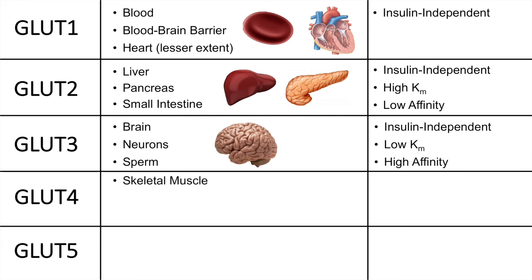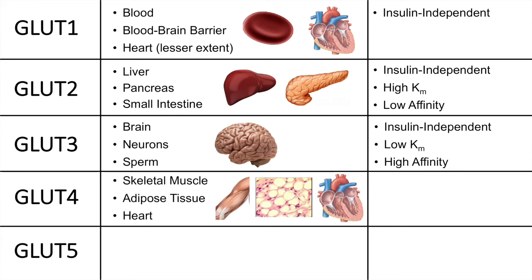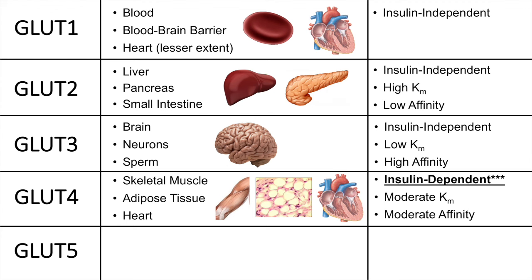For GLUT4, these are found in skeletal muscle, adipose tissue, and the heart. The heart has both GLUT1 and GLUT4, and GLUT4 actually outnumbers GLUT1 in the heart by about a 3-to-1 ratio, making it more important for heart metabolism. The main key point for GLUT4 is that it is insulin dependent. When insulin is released, it allows the translocation and incorporation of GLUT4 into the cell membranes of skeletal muscle, adipose tissue, and the heart, allowing those organs to uptake glucose.